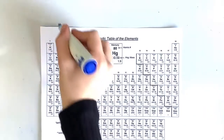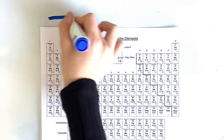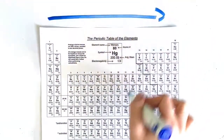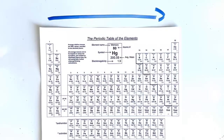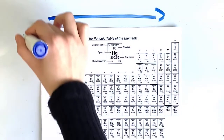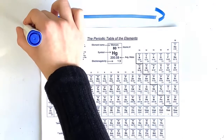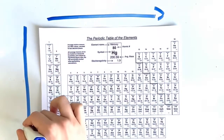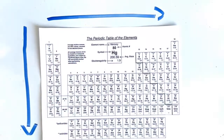When we look at the periodic table as a whole, moving across the table, the atomic number increases by one, which means that the number of protons and electrons increase. When we move down the periodic table, the atomic number also increases, meaning the number of protons and electrons increase.